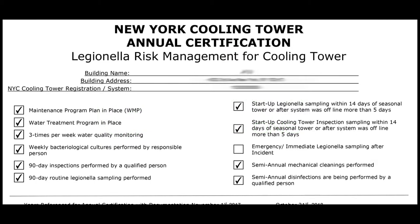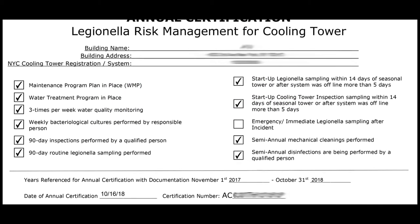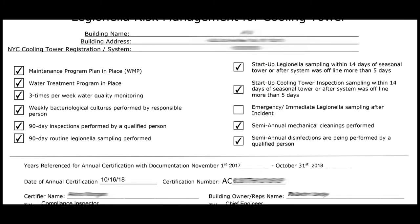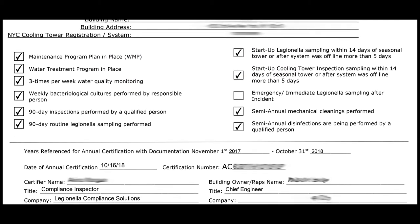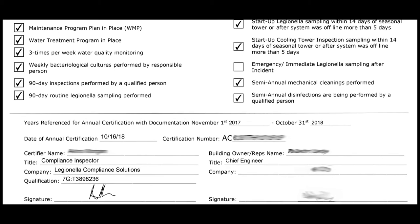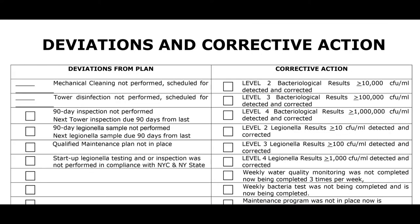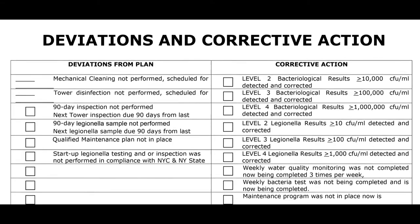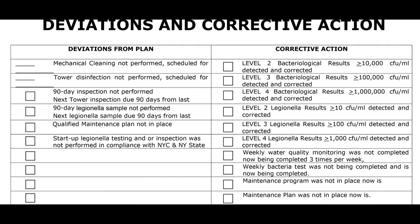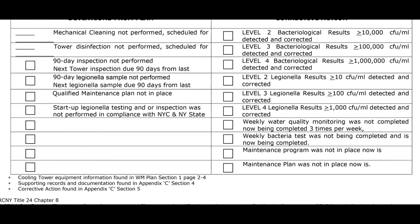In order to stay in compliance with New York City Local Law 77, the responsible person is required to perform the following tasks on their cooling tower water system. We will break down the necessary actions to be taken and explain how to fill out the appropriate paperwork for these tasks. Let's begin.